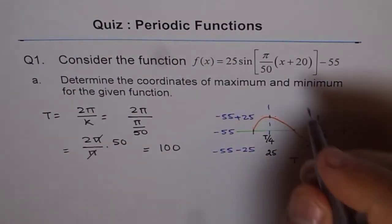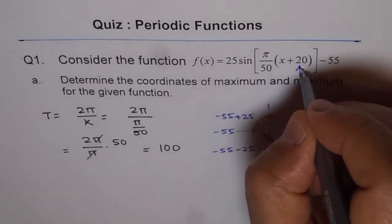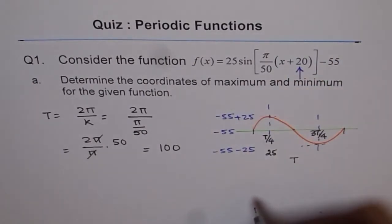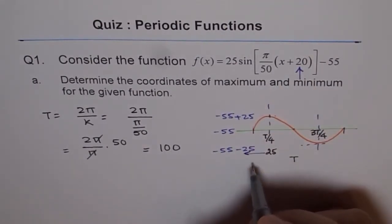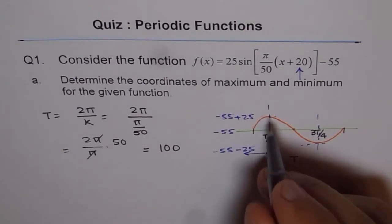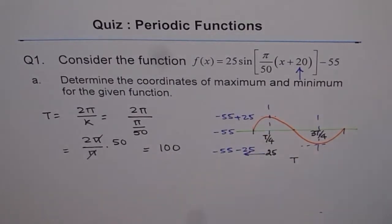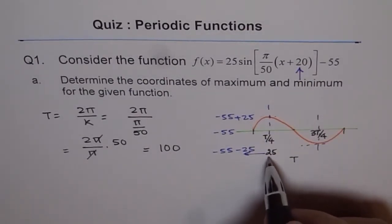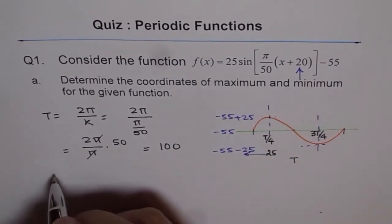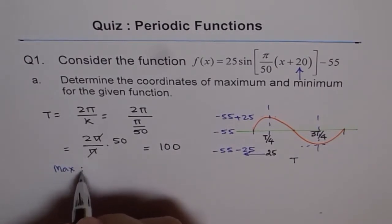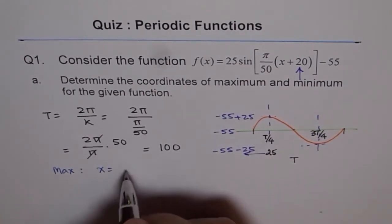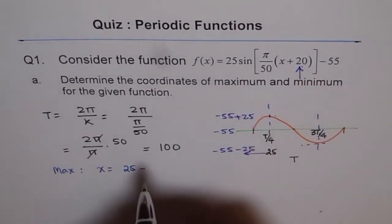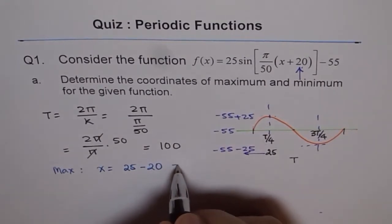Since the wave has moved 20 units left, this position moves 20 units left. So, the maximum will occur at 25 minus 20. Do you agree with me? So the maximum is at x equals to 25 minus 20, which is at 5.